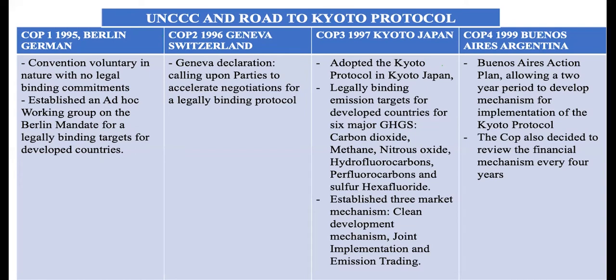The conference also established three mechanisms. There was a Clean Development Mechanism, which was basically a trading mechanism between developed countries and developing countries. There was also an emissions trading scheme, which could be done within a developed country or between countries. However, the conference had not yet negotiated the rule book of the Kyoto Protocol.